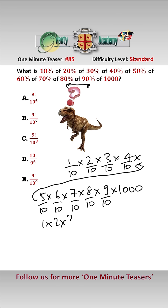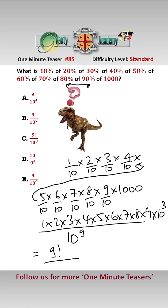So we have basically one times two times three times four times five times six times seven times eight times nine over ten to the power of nine, times one thousand, which is ten cubed. And that gives us nine factorial over ten cubed.